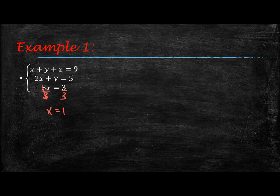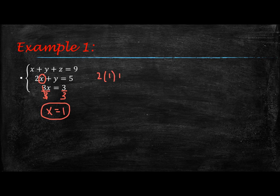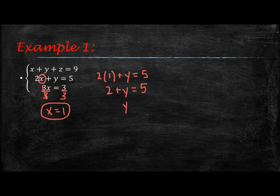Then I'm going to take that value of 1 and plug it into equation 2 in place of x. That will allow me to solve for y. So I'll have 2 times 1 plus y equals 5. So 2 times 1 is 2, 2 plus y equals 5. Therefore y is equal to 3 when I subtract 2 from both sides.